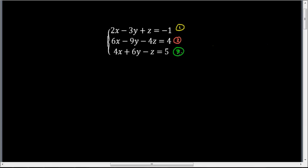I need to solve one of these equations for one of the variables. I've got some mixed-up signs in equation one, but I've got z somewhat by itself there. If I just subtract 2x and add 3y to both sides, I'd solve for z. Down here in equation three, I can more easily just add z to both sides and subtract 5. So I'm going to go ahead and solve equation three for z — that's going to be my first step.